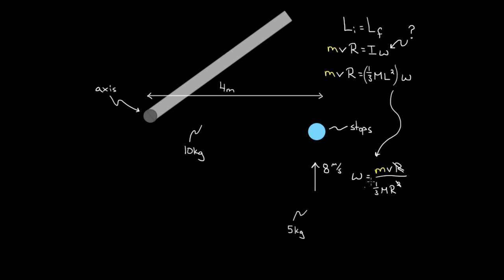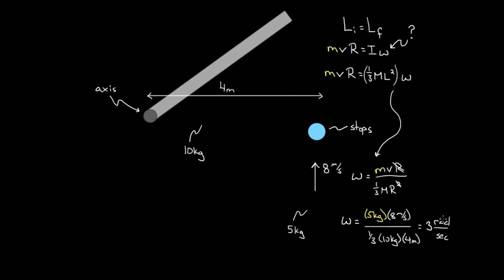Plugging in numbers: five kilograms times eight meters per second, divided by one-third times ten kilograms times four meters. Solving that gives three radians per second. So after the ball hits the rod and transfers its angular momentum, the rod spins at three radians per second.